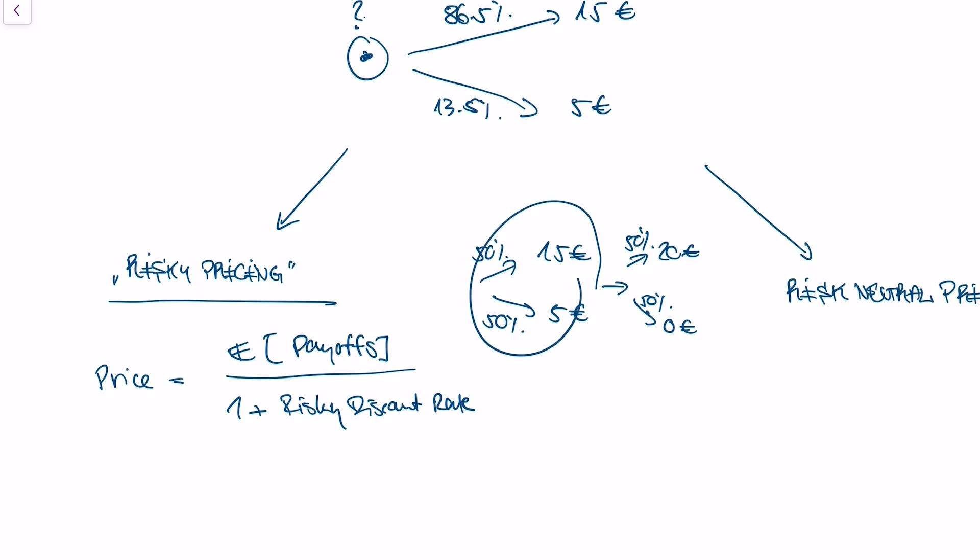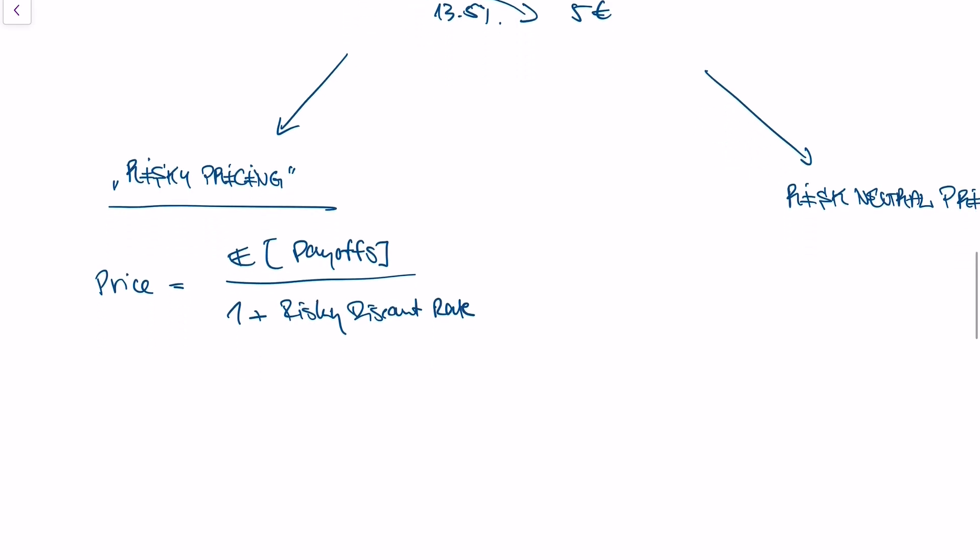Because this asset here moves around more. The distance from 0 to 20 euros is 20 euros, and the distance from 5 euros to 15 euros is only 10 euros. But if you want me to get more into this discount rate, there's actually a lot to it. Leave me a comment, I'll make a separate video.